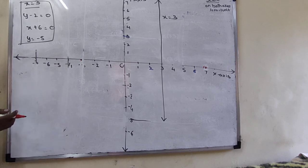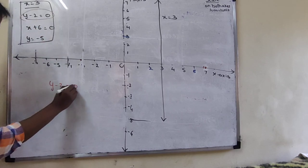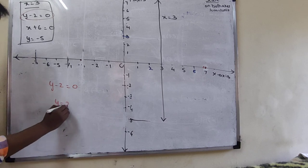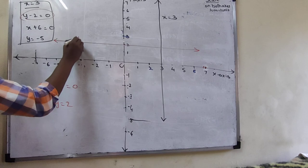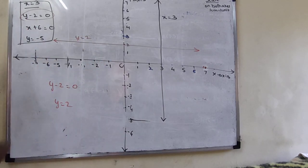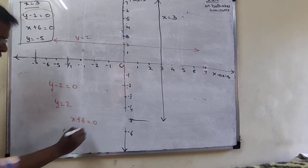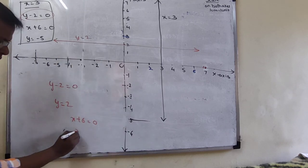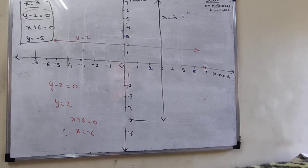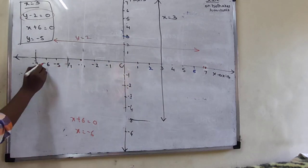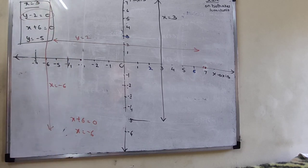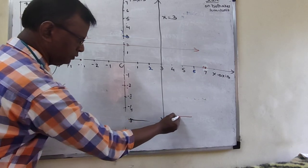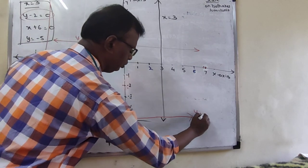Solving equation 3: x + 6 = 0 gives x = -6, which is a vertical line at x = -6. Equation 4: y = -5 is a horizontal line at y = -5. Now draw all four lines on the graph. x = 3 is vertical, y = 2 is horizontal, x = -6 is vertical, y = -5 is horizontal.